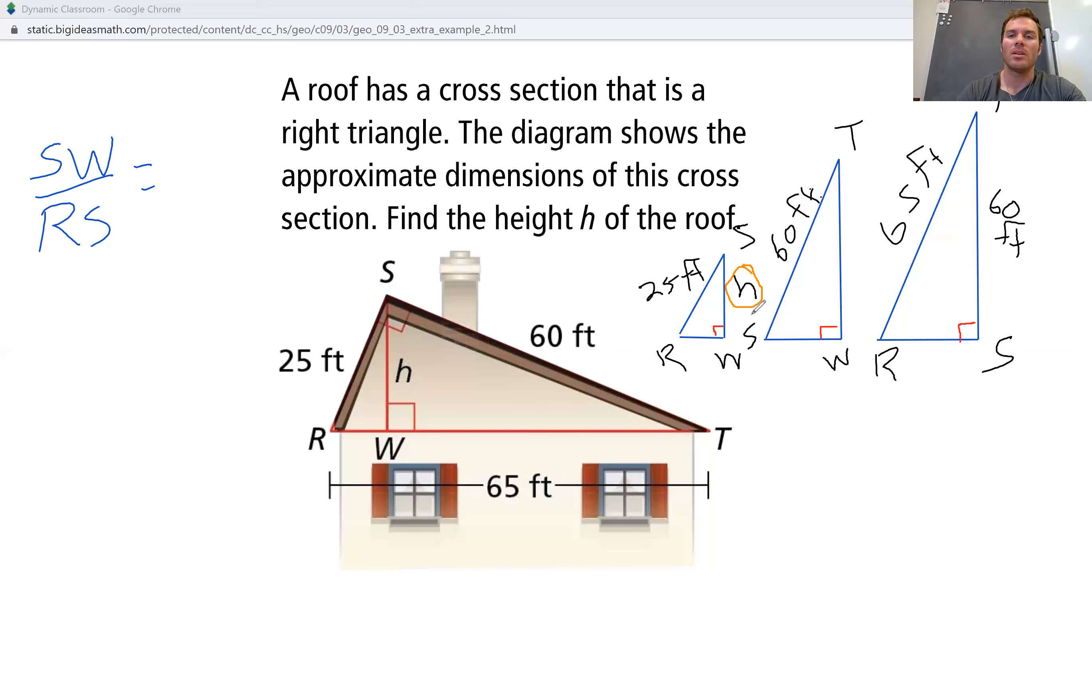So SW is this up and down line here. Well, which triangle has a length to it on the up and down part? TW, no, it does not. ST, sure does. So we're going to call ST over, and then we need to find the one that matches with RS, which is RT. There is the beginning of my equation.